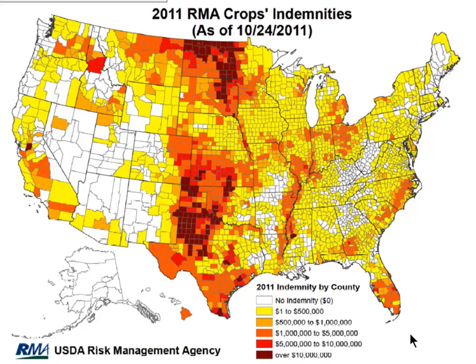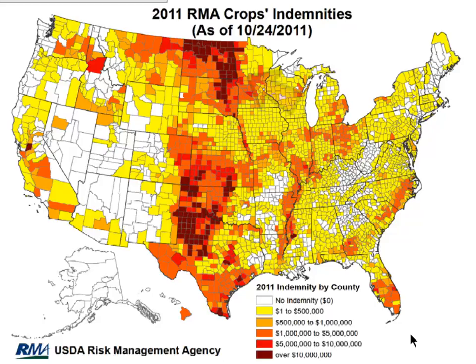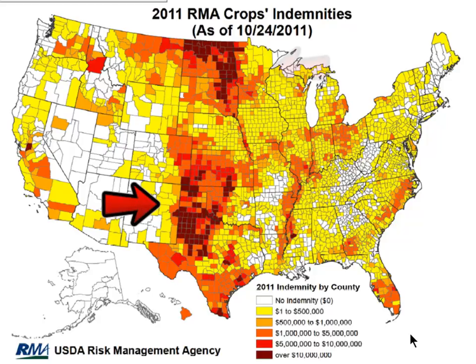As of October 24th — they only update this map about once a month — you can see Texas is just covered up in indemnities. The dark maroon is over $10 million per county, which most of our counties in this part are. Up in North Dakota that was flooding in the spring, mostly prevented planting because they couldn't get in. So it was kind of an interesting year — drought all the way up into Kansas, and flooding further north. It was either too wet or too dry in the big areas that had payoffs.